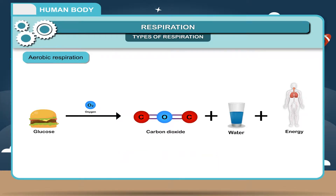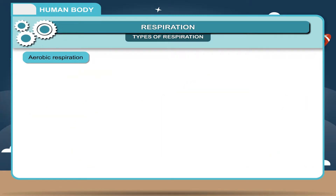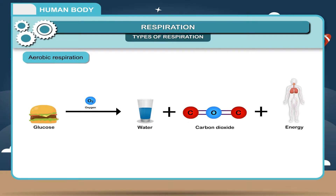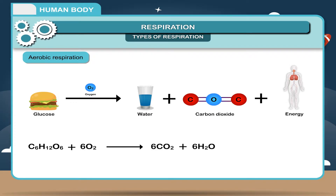The carbon dioxide and water are the by-products. It occurs in the mitochondria of the cells. The equation is: Food + Oxygen → Water + Carbon Dioxide + Energy. In chemical terms: C6H12O6 + 6O2 → 6CO2 + 6H2O + Energy.